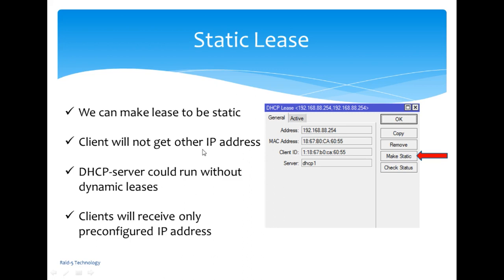The client will not get other IP data. If you have a client with an IP, you can use the number of the administrator's IP. If you have a dynamic list, you can use the dynamic list. If you have a pre-configured IP, you can use the administrator's IP. In the area, you are able to find the status of the IP.